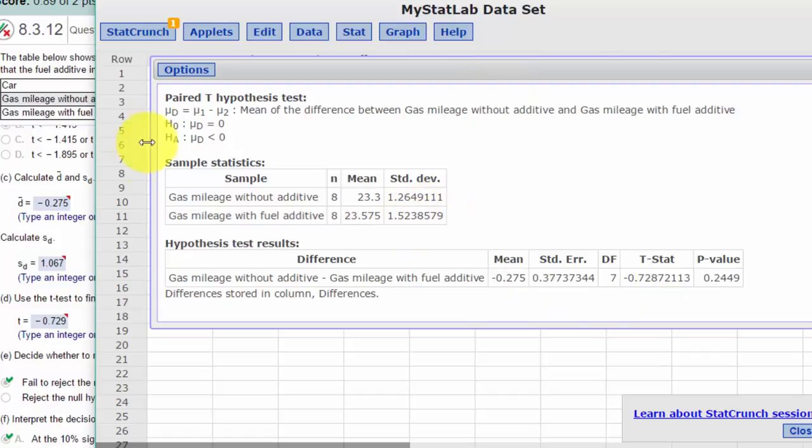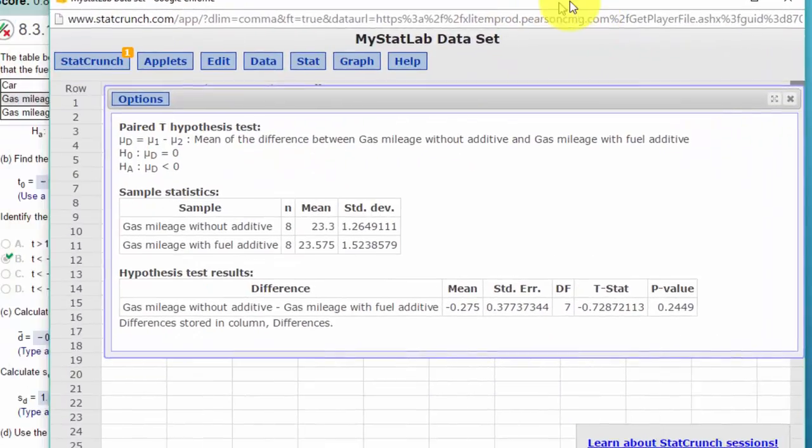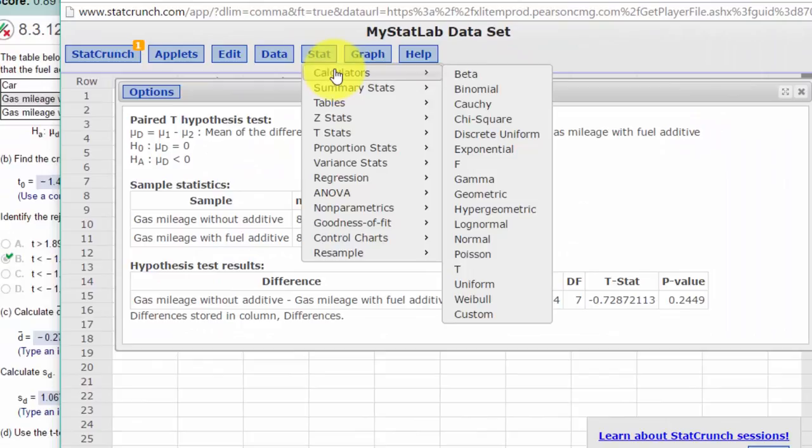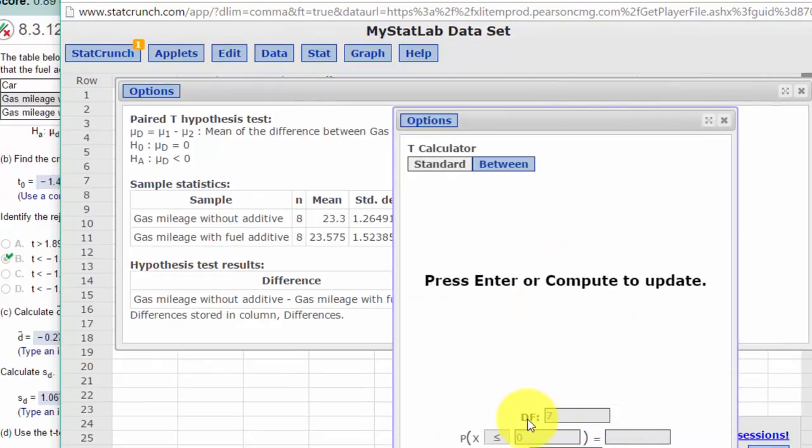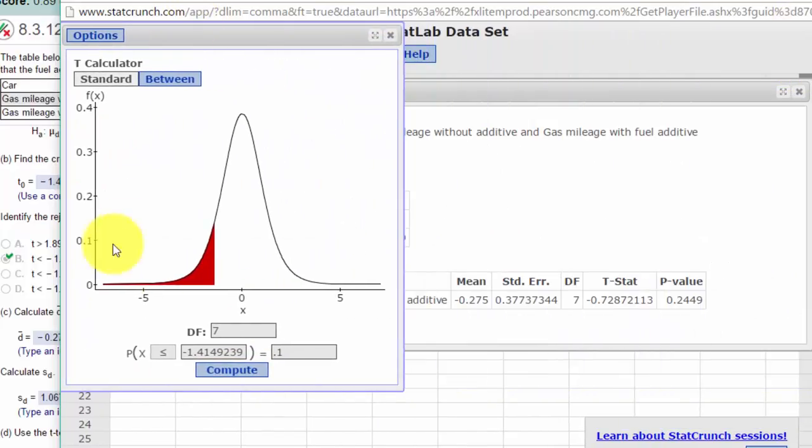Let me just call that rejection region back up again. I don't know why I closed it out, but we've got our T stat of 7 and 0.1. Okay, there's our rejection region, anything smaller than minus 1.415. And of course, our T stat minus 0.728 is in here somewhere, so it's definitely not in the rejection area.